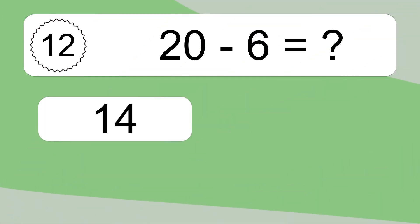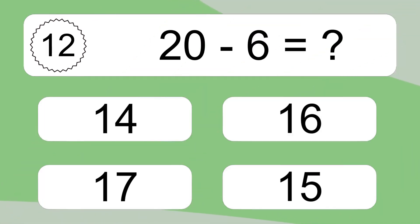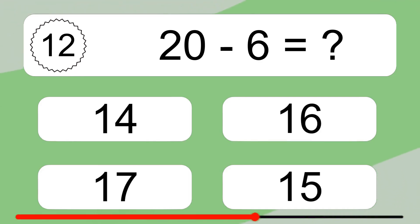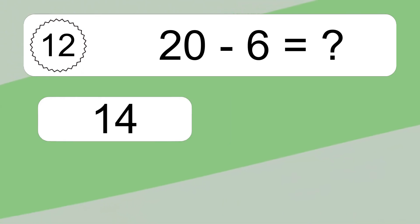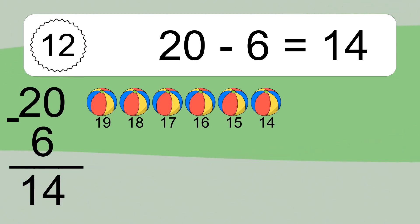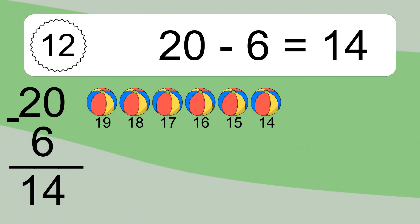20 minus 6 equals what? 20 minus 6 equals 14. Let's count it: 19, 18, 17, 16, 15, 14.